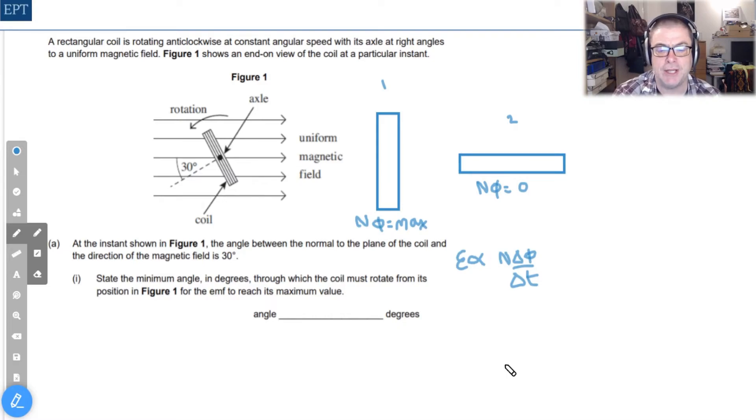But it's not that big a change. There will be a value of N Δφ/Δt but perhaps not a very big one. The situation is different in position two though because we are going to move from a position of no lines going through, or N φ zero, through to after five degrees N φ being something.